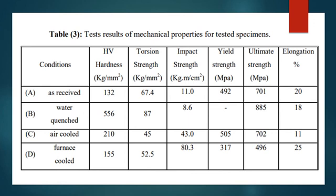For furnace cooling, the properties are essentially the opposite of water quenching. The sample has high ductility and high impact strength, but low yield and ultimate tensile strength. Furnace cooling would be a good choice in applications where a design needs to last a long time, can be susceptible to some deformation, but bears smaller loads.